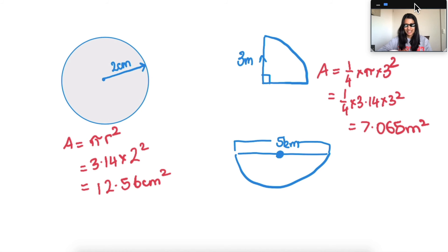The last one's a little bit tricky because you can see there's a 5 going across. This is our diameter, not our radius. So first of all, to get to the radius we need to do 5 divided by 2, split it in half. 2.5.